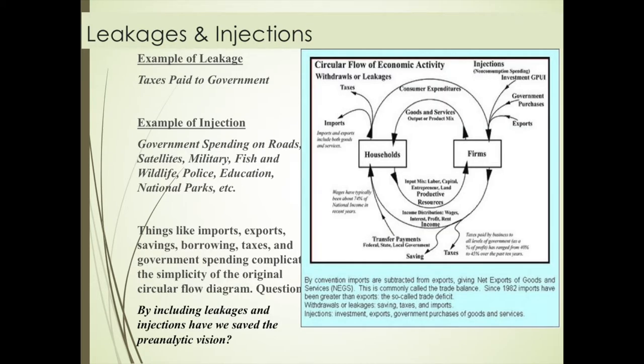Leakages and injections that macroeconomics focuses on come in the form of savings and investment, taxes and government spending, imports and exports, and an ever-increasing or expanding money supply. These leakages and injections force the wrong focus on the system. This is not the pre-analytic vision of the ecological economist, but of the neoclassical economist. In assuming that the economic system itself is the whole, they have ignored the fundamental throughput of matter and energy from the environment from which the economy obtains its sustenance.